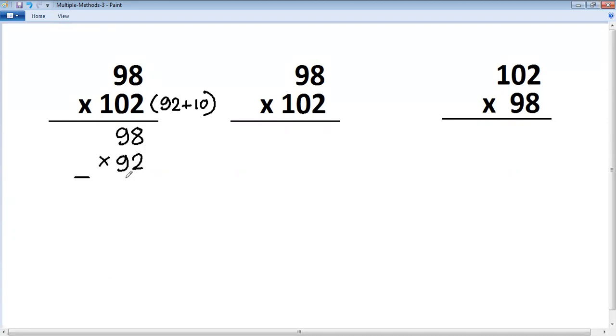This is a special case now. 9 is common. 9 into 10 is 90 and 8 into 2 is 16. Plus 98 into 10 is 980, so plus 980.